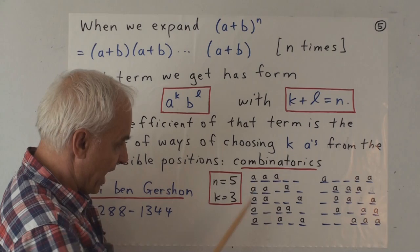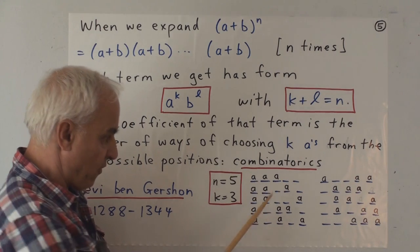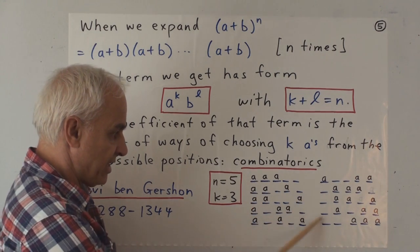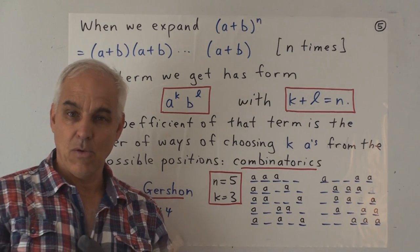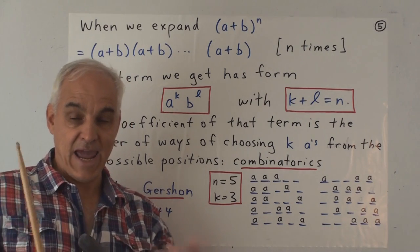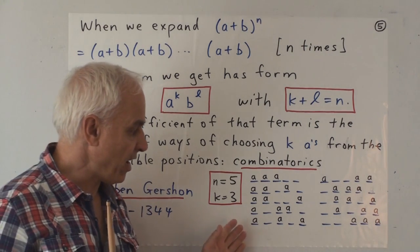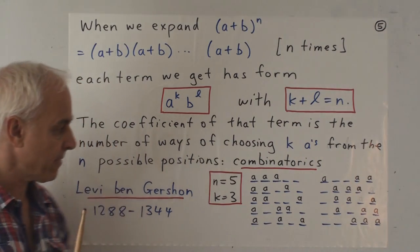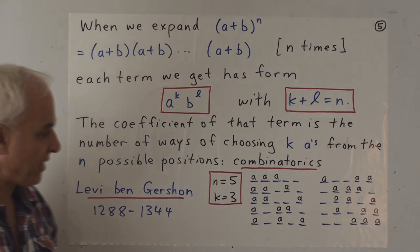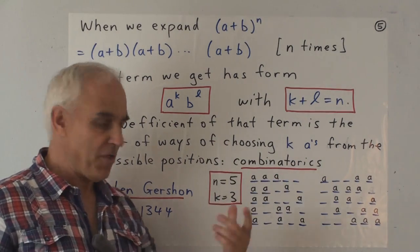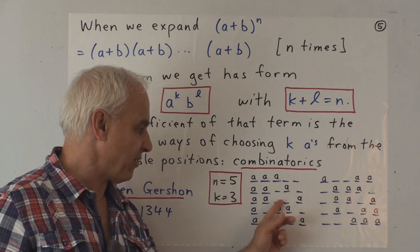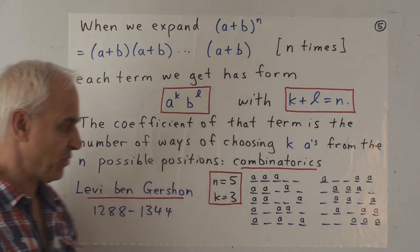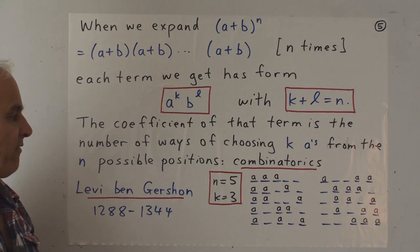So we can choose the first 3 a's or the first and the second and the fourth and so on. You can see that there are exactly those 10 ways of picking 3 a's from the 5 positions. And it's worthwhile saying that once we've chosen where the a's are, well, then the b's are going to be obvious, right? The b's are just the remaining blank spaces there. So the a's determine everything.